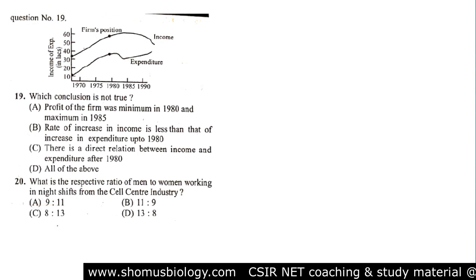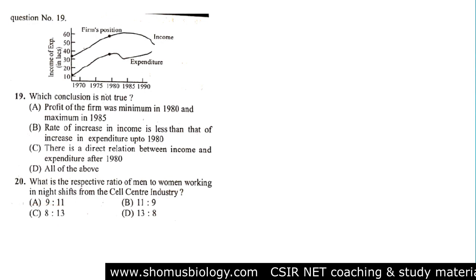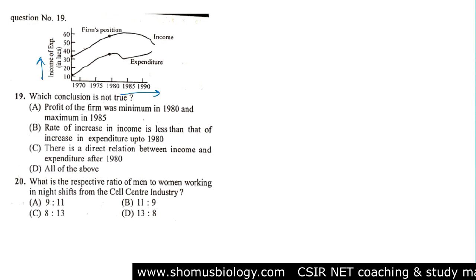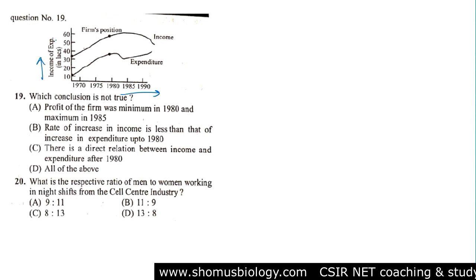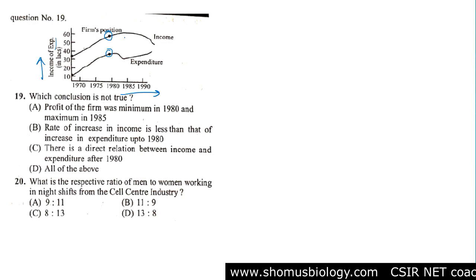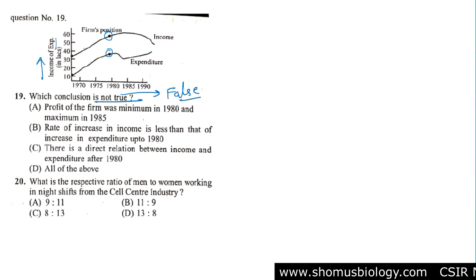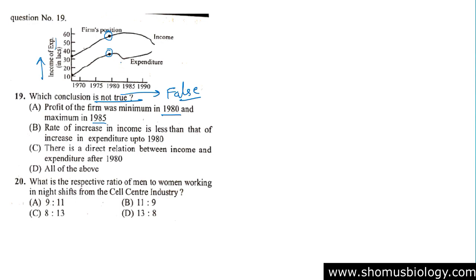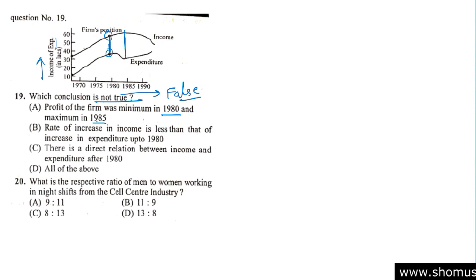Now let's solve another data interpretation question. On the x-axis are years, and on the y-axis are income and expenses in lakhs for a firm. Both expenditure and income are plotted. The question asks: which conclusion is NOT true — i.e., which one is false? Statement one: profit of the firm was minimum in 1980 and maximum in 1985. Looking at the graph, in 1985 the gap between income and expenditure is large, so this statement is true.